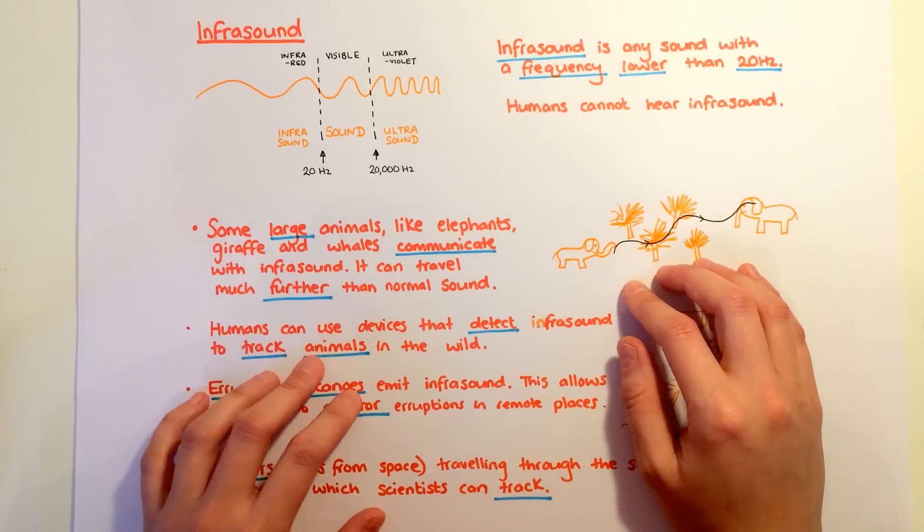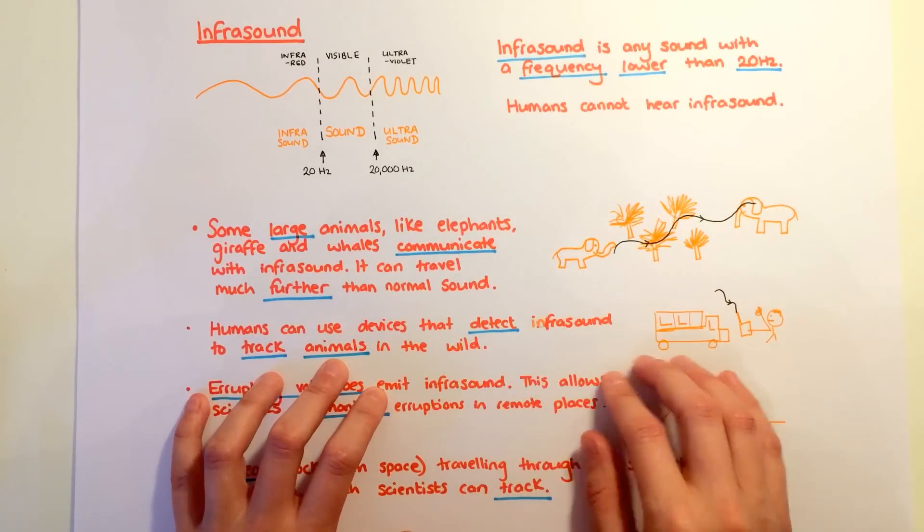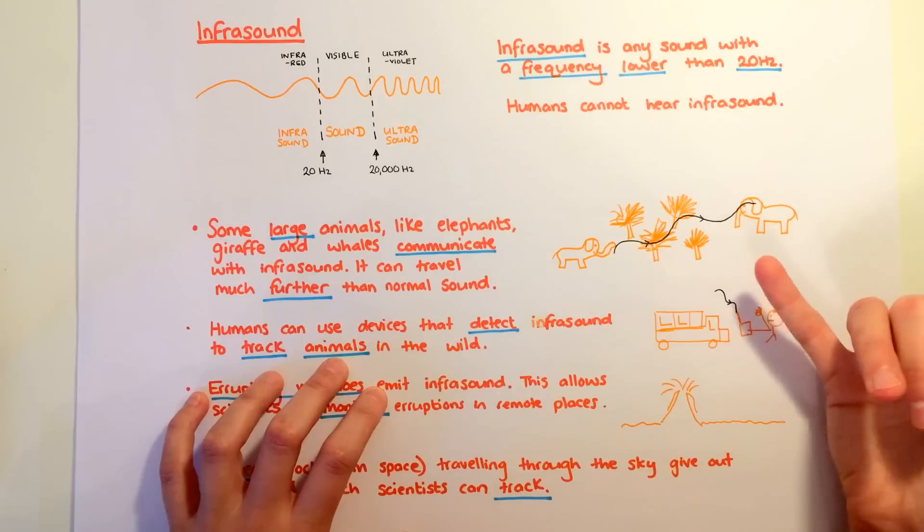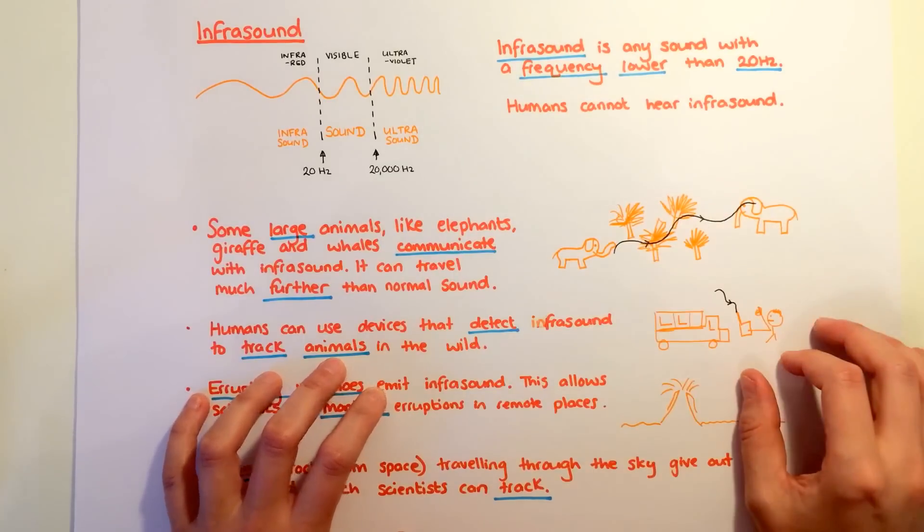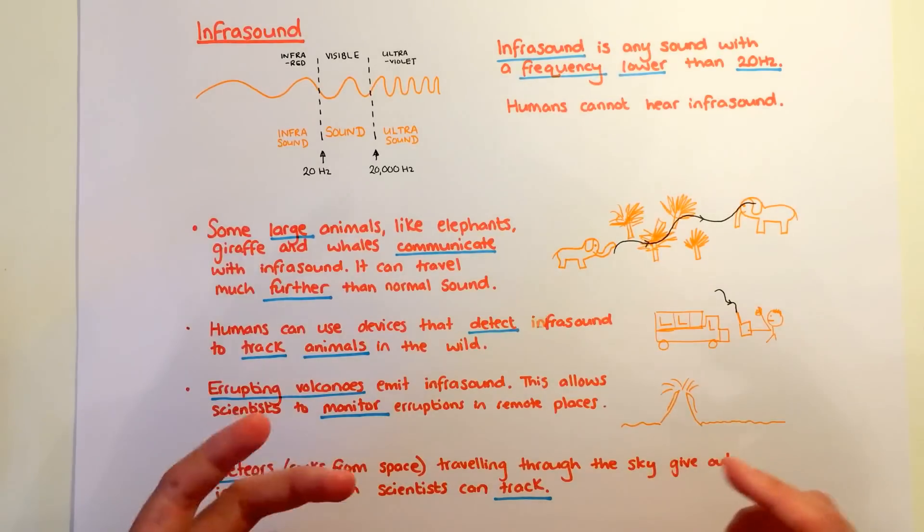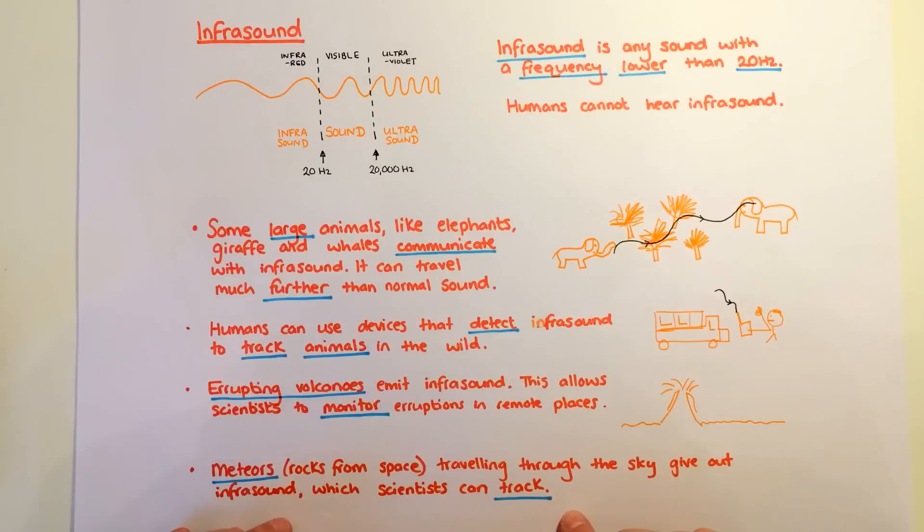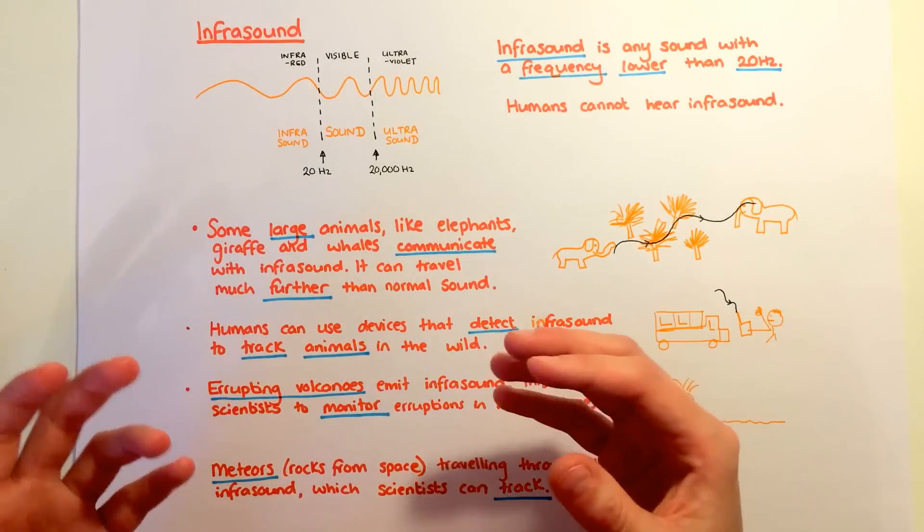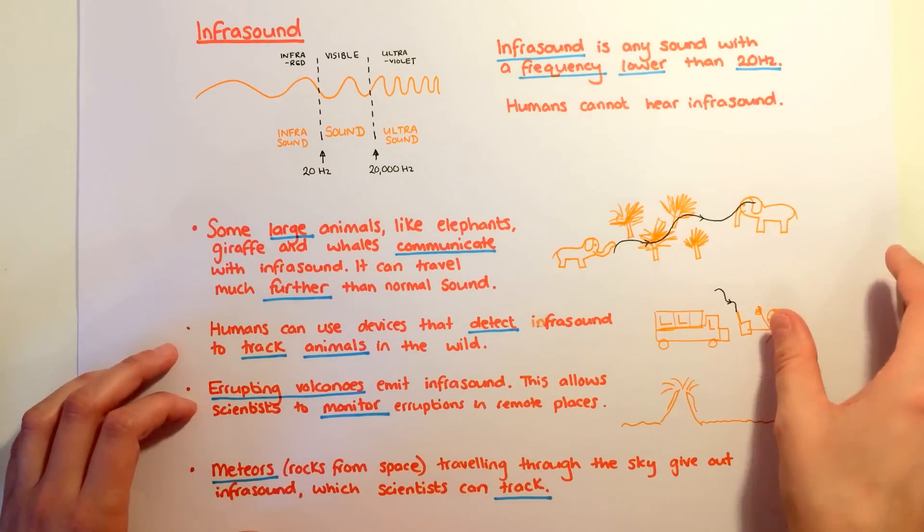They can communicate over hundreds of kilometres. It's also useful for humans because we can use devices that detect infrasound to work out where animals are in the wild. We can also detect volcanoes erupting in remote places and track meteors, since they give out infrasound.